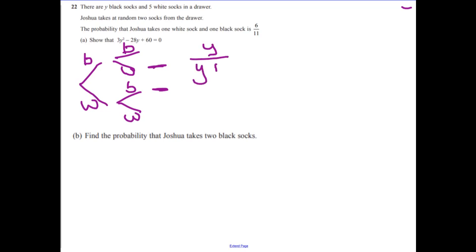Now start thinking about the second part. We would then multiply that by getting a white one, so that would be five, because there'd be five white socks, over y plus how many socks would there be altogether? Four.